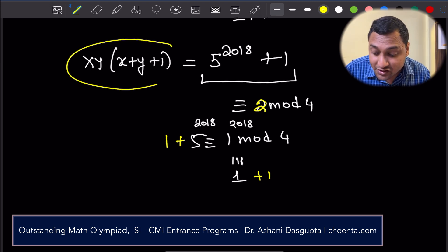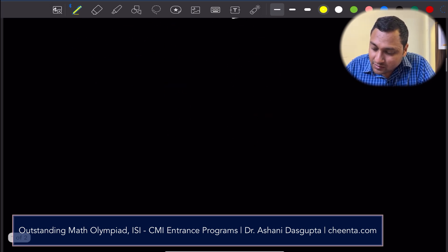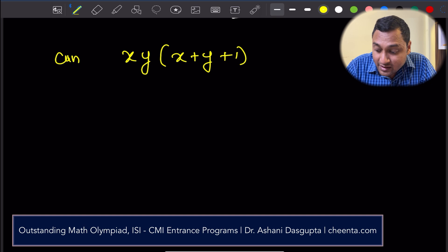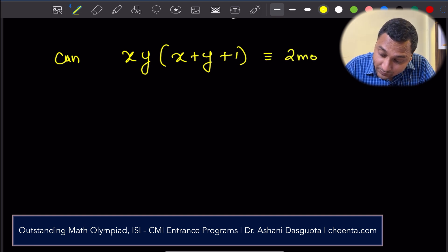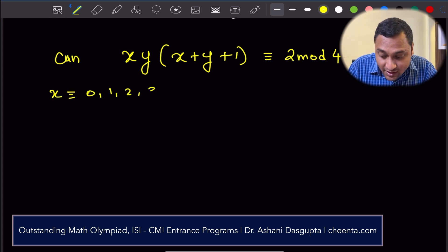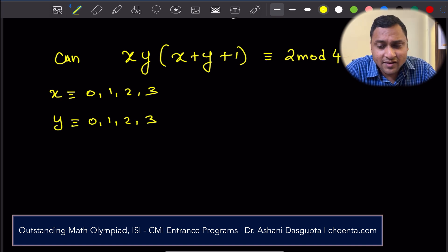You want the left-hand side to be also 2 mod 4. The question is, is it possible? Can xy times x plus y plus 1 be congruent to 2 mod 4 for some values of x and y? Let's check. This is a hard check. You have to check by numbers. So, x can be congruent to 0, 1, 2, 3. Y can be congruent to 0, 1, 2, 3. We really have to check 16 values, 16 pairs.